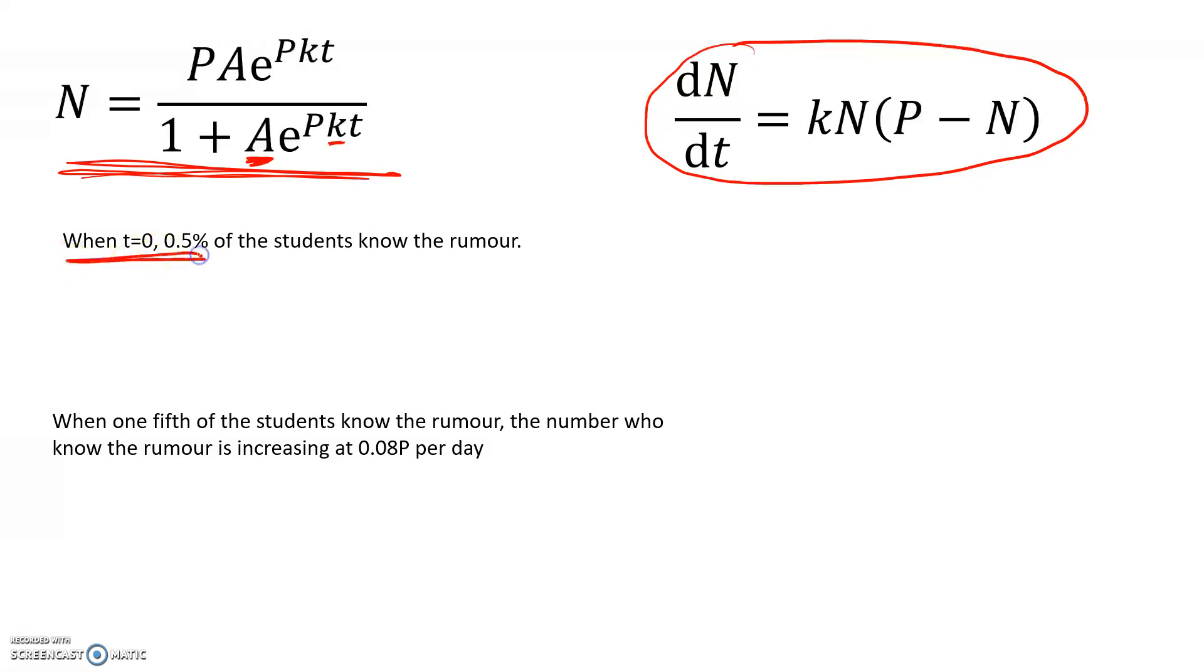When t is 0, 0.5% of the students know the rumour. So we've got when t is 0, N is equal to 0.005P. We're going to work with that one in this equation, substituting in t equals 0 and N equals 0.005P.